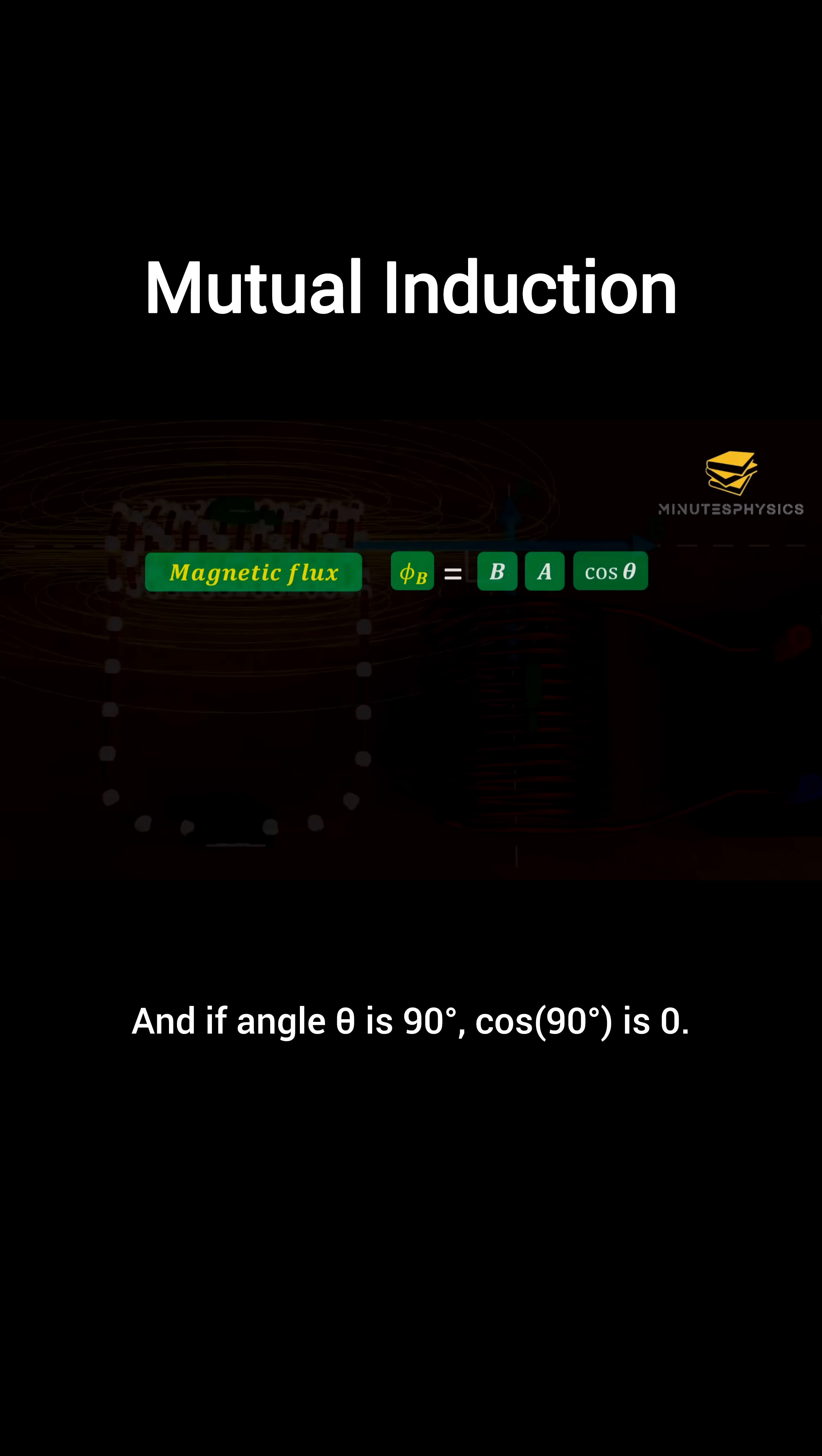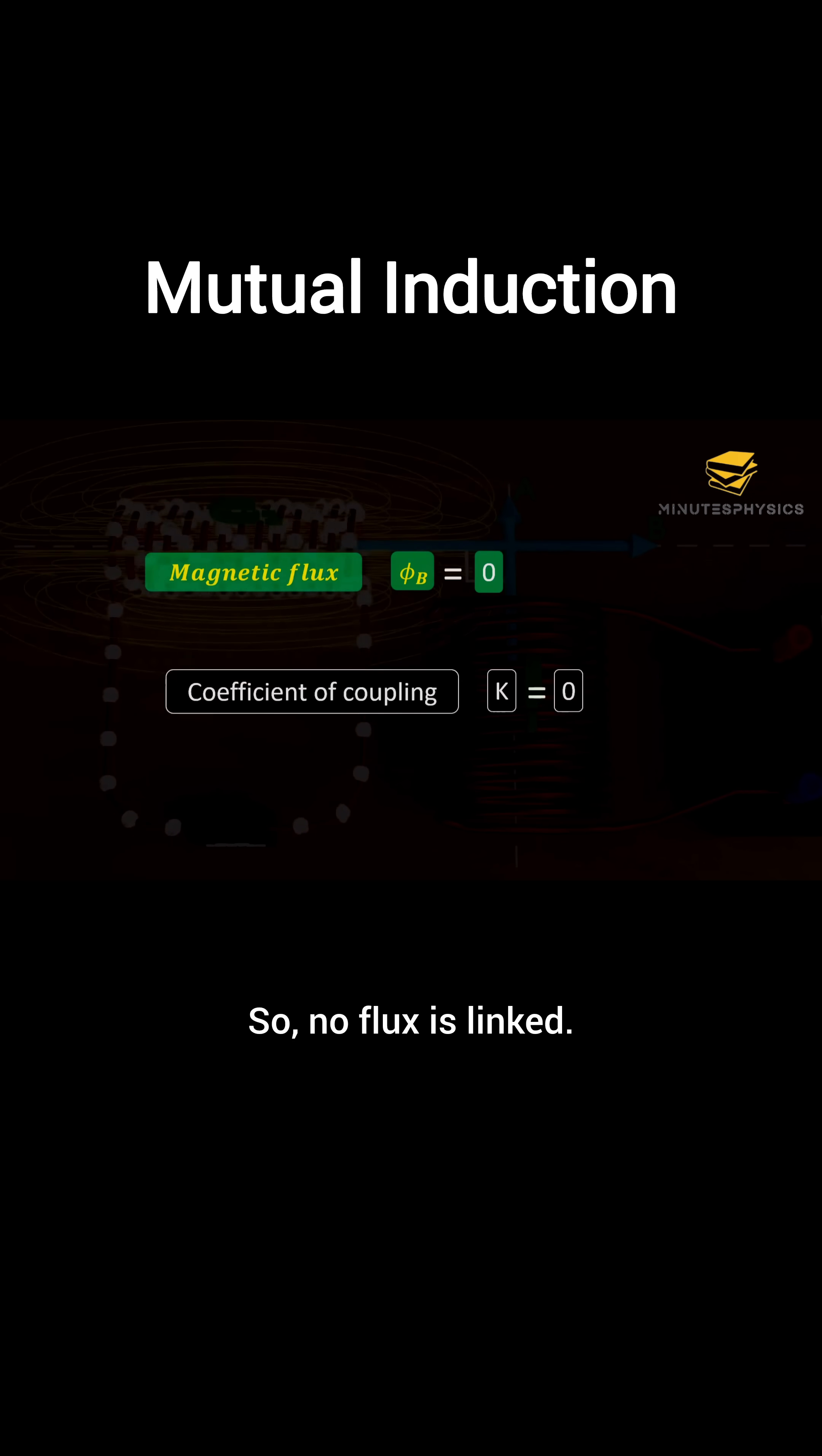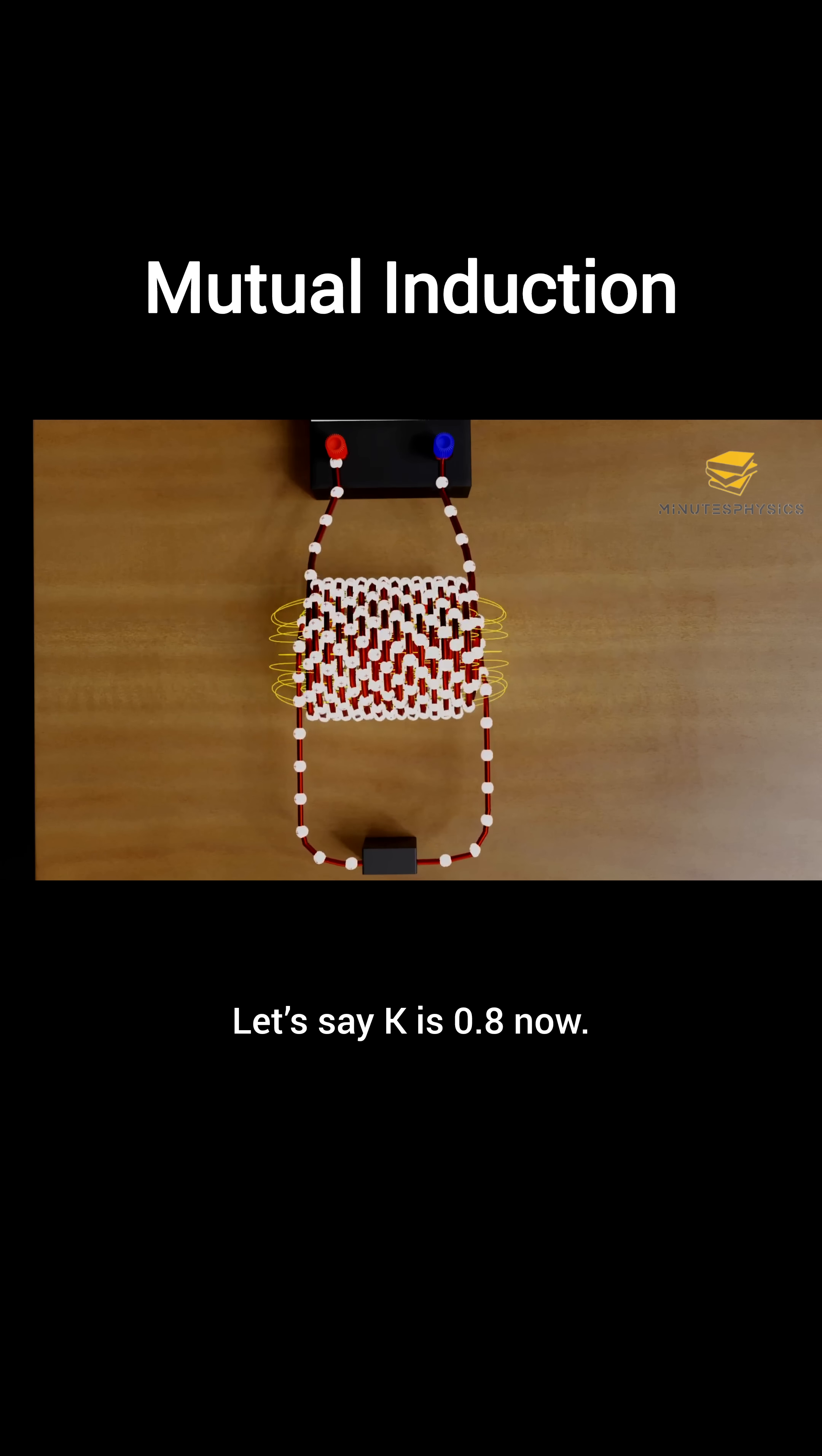To improve this, let's overlap the coils perfectly. Now most of the magnetic flux from C1 links with C2. Let's say k is 0.8 now. Much better.